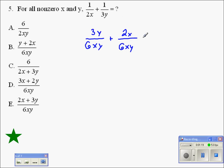Now that we have common denominators, we can add straight across. 3y plus 2x, those can't combine. We just leave them 3y plus 2x. And they have a common denominator of 6xy.